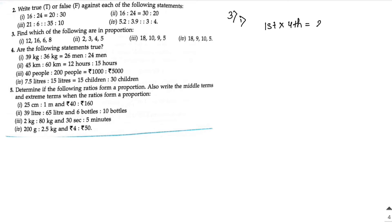Sum number 3: find which of the following are in proportion. The formula is: first number × fourth number = second number × third number. Always remember that formula when four numbers are in proportion. First one: 12 × 8 = 96, and 16 × 6 = 96. Both are equal, so definitely in proportion.